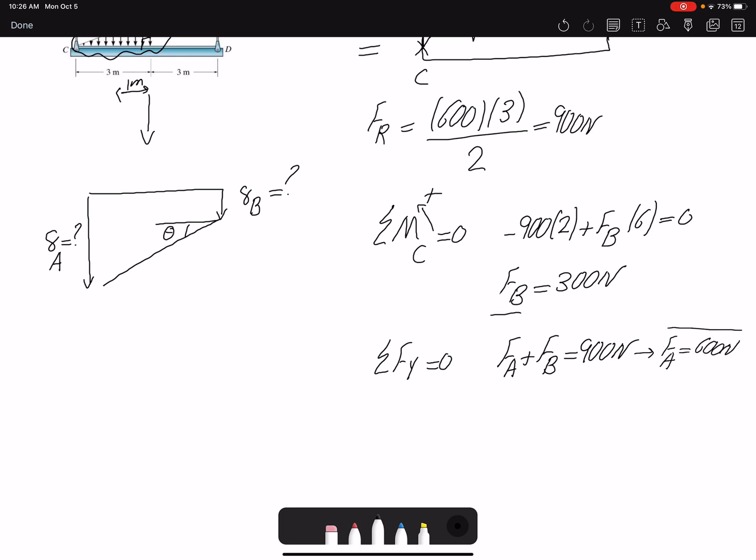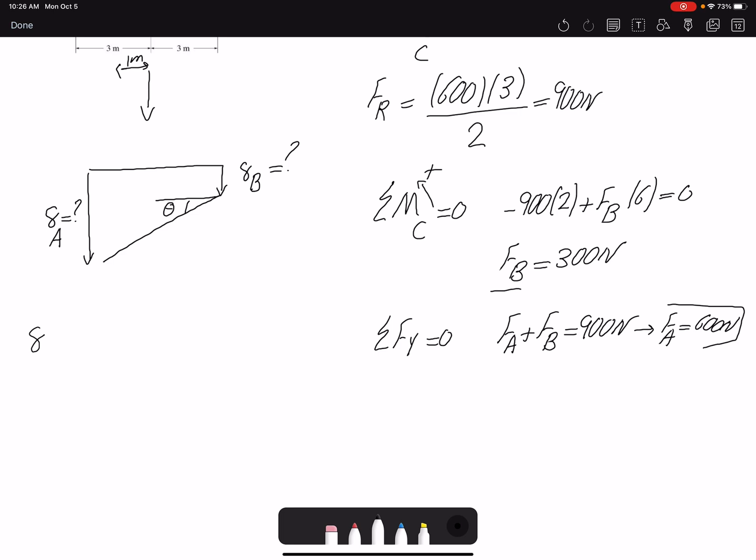Now that I have Fa and Fb, I can find delta_a and delta_b. According to spring equation, delta_b is simply Fb over Kb. Fb is 300 Newtons and Kb is 1.5 kilonewtons or 1500 Newtons per meter. So delta_b would be 0.2 meters. Pay attention to the units as well - one is given in Newtons, the other in kilonewtons.